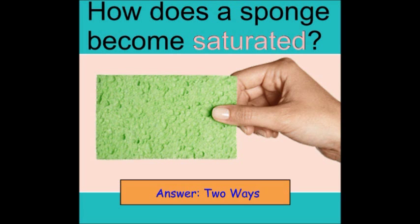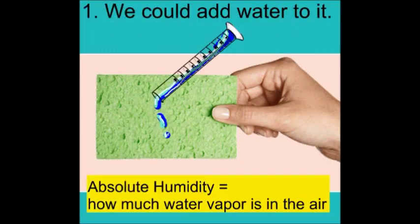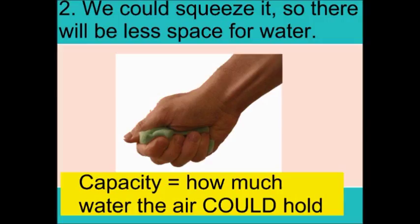How can a sponge become saturated? There's two ways. The first is you can add water to it. Absolute humidity is the term that describes how much water vapor is actually in the air. The other way the sponge could reach a saturation point is you could squeeze it, and that would mean that there would be less space for water in the sponge.